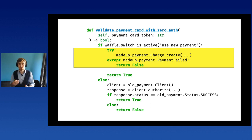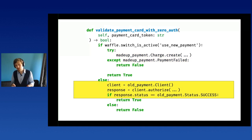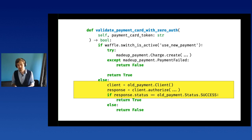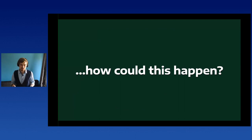One payment provider had a dedicated SDK library with its own API and its own arguments, and it signaled errors by raising exceptions. At the same time, we had to support the old legacy one — it also had an SDK but much worse, and it didn't raise exceptions; it returned errors as return values from the calls.